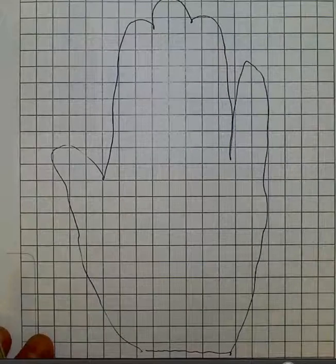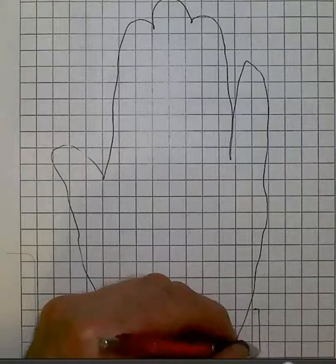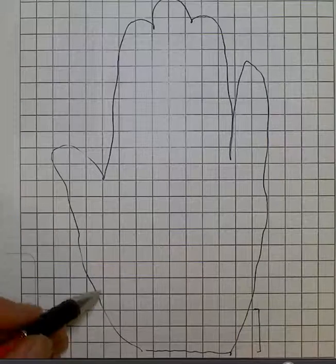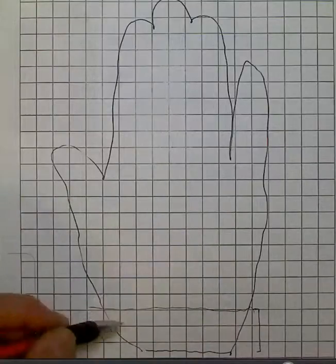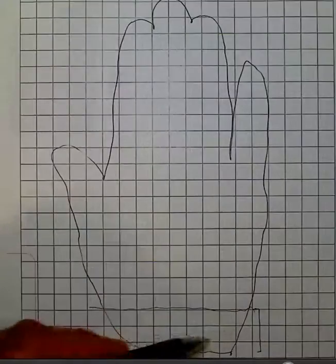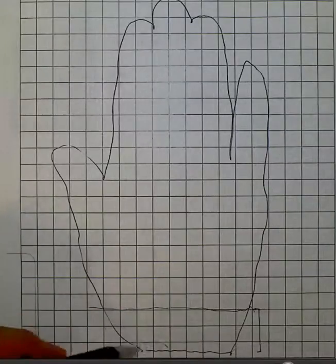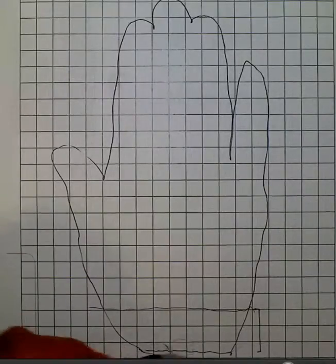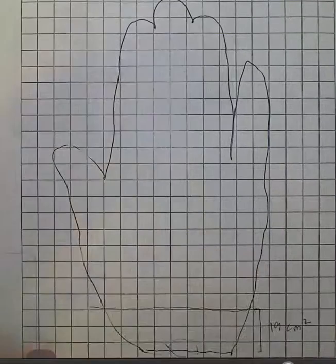It then becomes a case of measuring and determining the approximate areas. Now I've gridded off this little section so in my instance it's about 1, 2, 3, 4, 5, 6, 7, 8, 9, 10, 11, 12, 13, 14, 15 and then grouping these together 16, 17, 18, let's call it 19. So that's 19 centimeters squared.